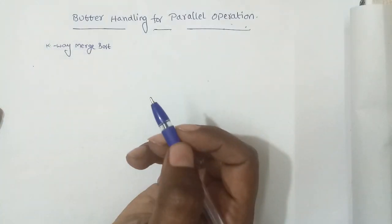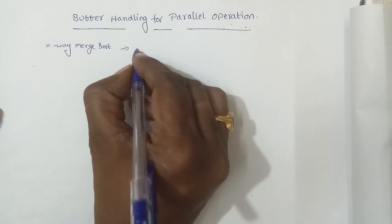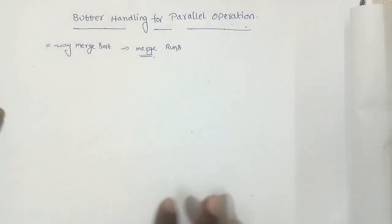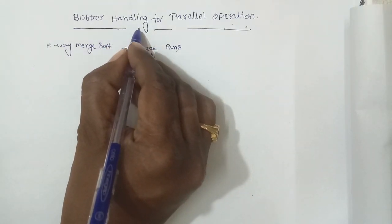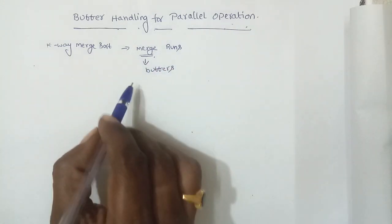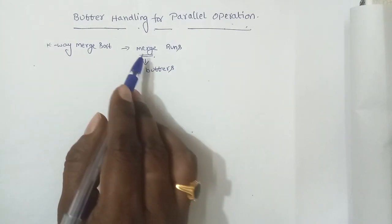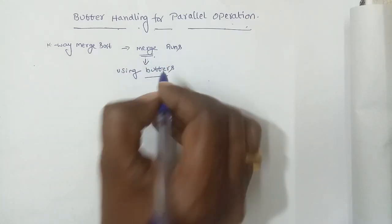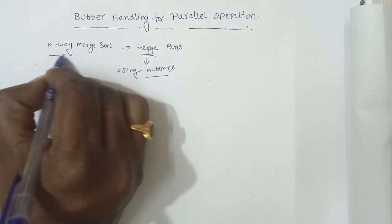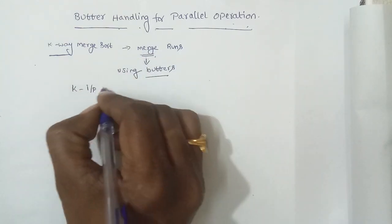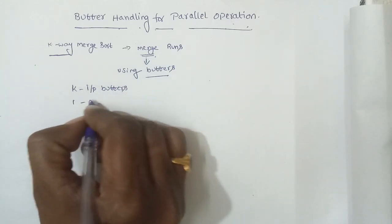Up to now we have discussed the k-way merge sort. In a k-way merge sort we are performing merge operations between the runs. The merging of the runs is done by using buffers. If we are using a k-way merge sort then we require k input buffers and one output buffer.